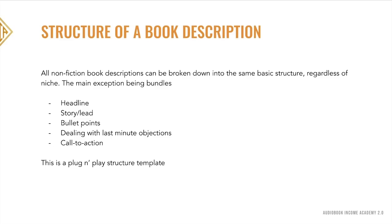All non-fiction book descriptions can be broken down into the same basic structure regardless of the niche. We break it down into five sections, which makes it a lot easier to approach and not as intimidating. Your description starts with your headline, followed by your story or lead, then your bullet points, dealing with last-minute objections, and finally your call to action. We're going to go through every single step and break it down with lots of detail.